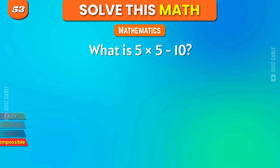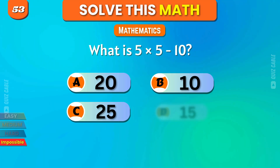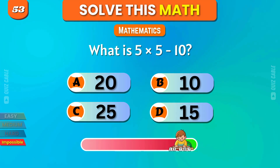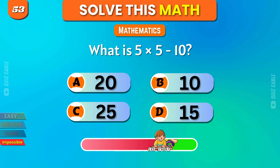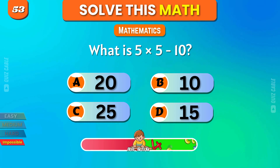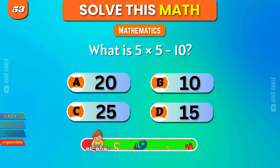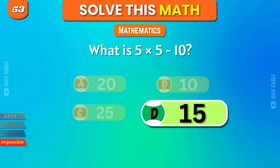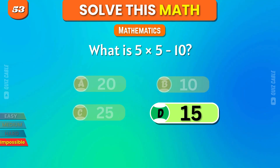What is 5 times 5 minus 10? 20, 10, 25, 15. That's right, 15.